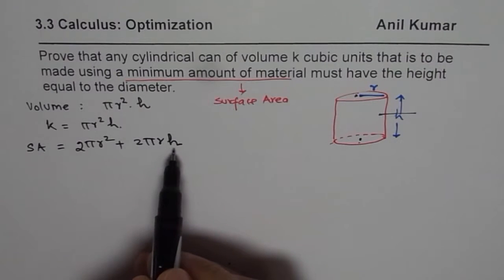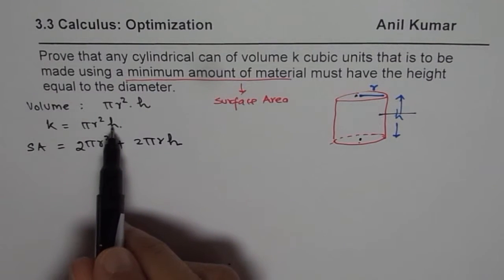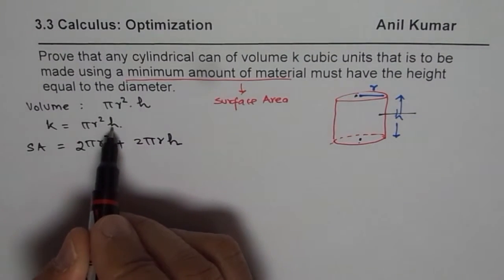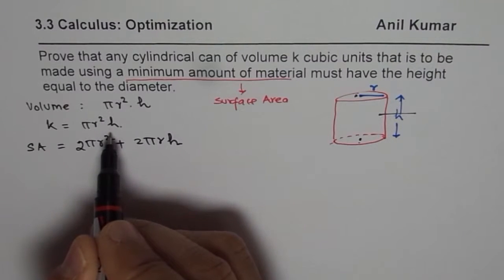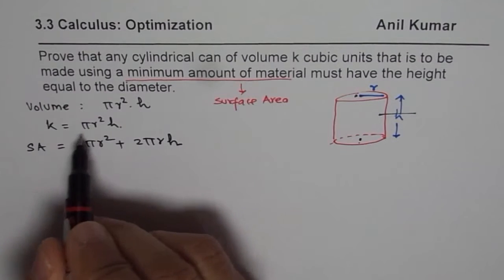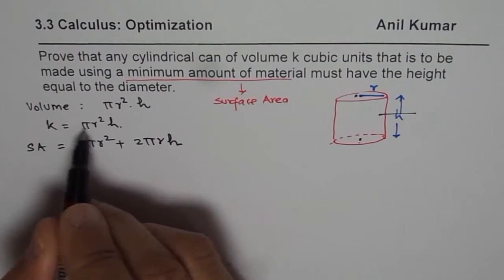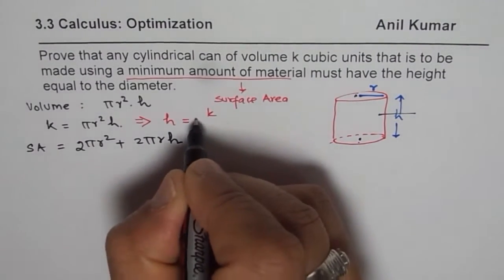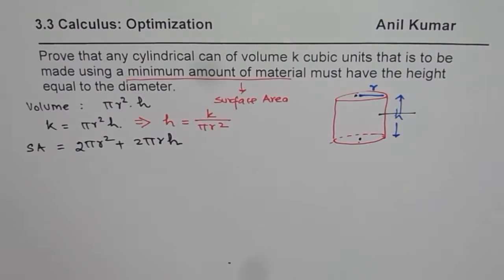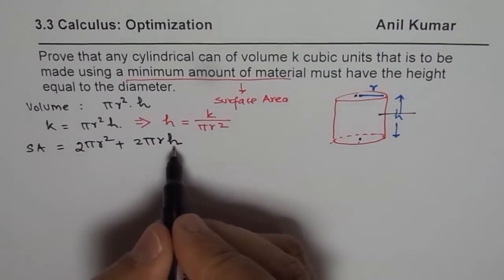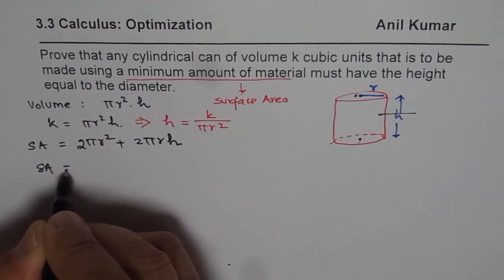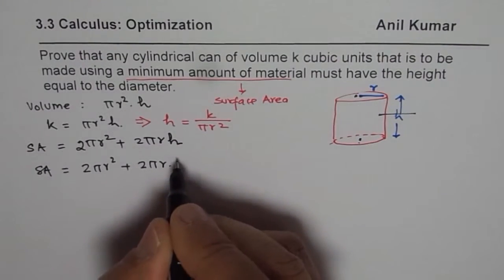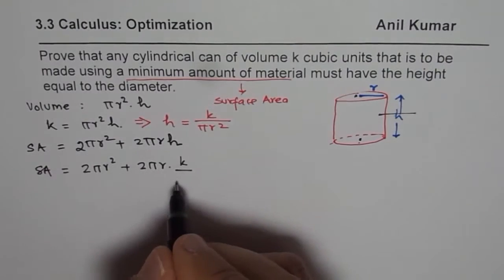In this expression we have two variables, so the idea is to get the equation in one variable, which we can do using the given condition k = πr²h. We need to write one variable in terms of the other. It is good to take h in terms of r, so from here we write h = k/(πr²). Now we substitute this for height, so surface area equals 2πr² + 2πr · (k/πr²).